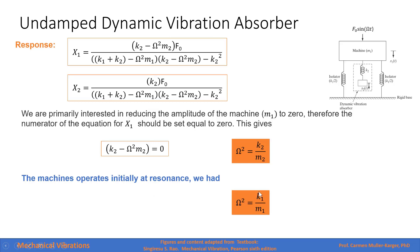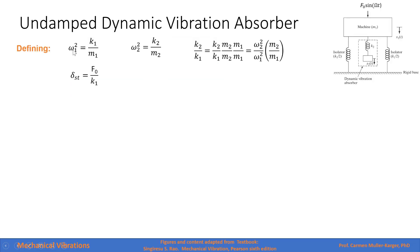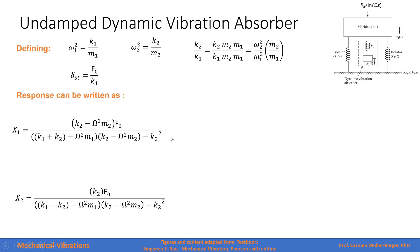As you recall, the machine operates initially at resonance, so the ratio of the spring constant to the mass of the machine is also equal to the forcing frequency squared. Let's define omega_1 squared as k1/m1 — the properties of the machine — and omega_2 squared as k2/m2 — the properties of the dynamic absorber. We have a relationship between k2 and k1. With some algebraic manipulation, we get this expression, and the static deflection is the magnitude of the external force divided by the spring constant of the machine.